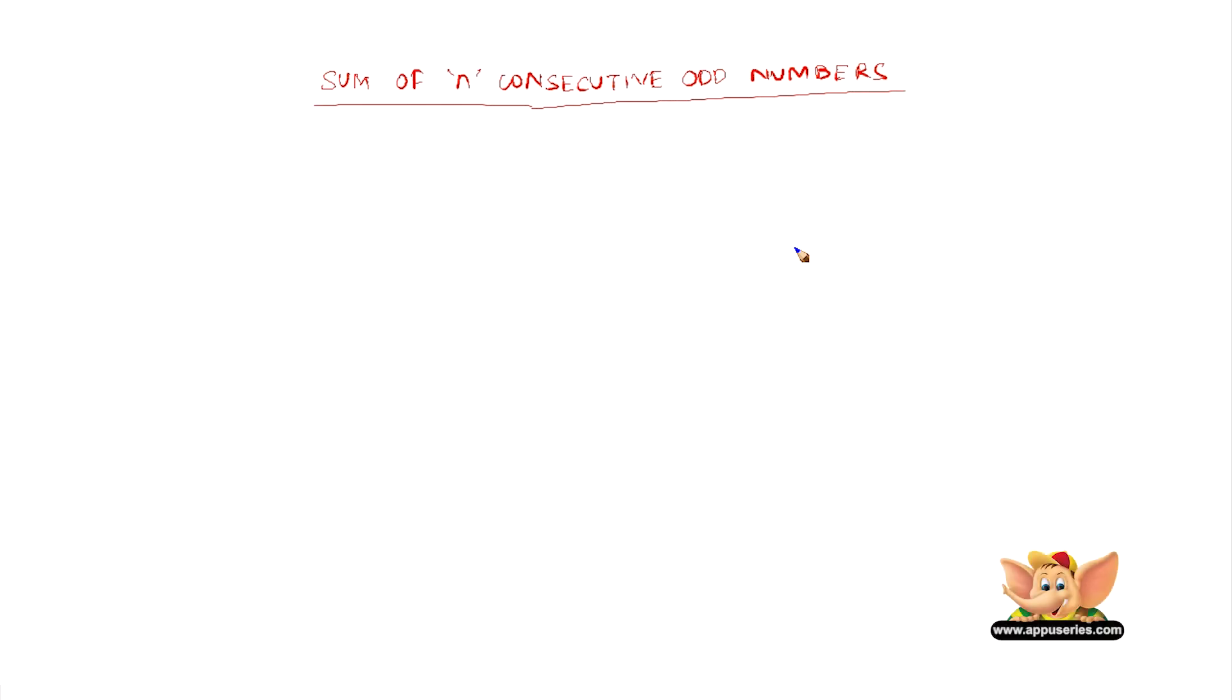Here let us learn how to find the sum of n consecutive odd numbers. All we need to remember is the formula n square. What does n represent? n represents the number of odd numbers that we are going to add. So let us consider the first example.